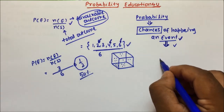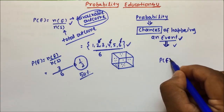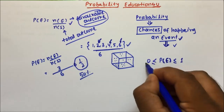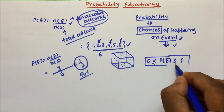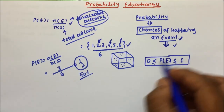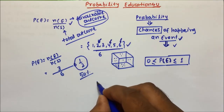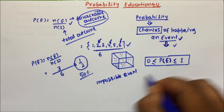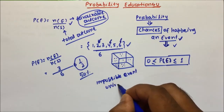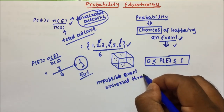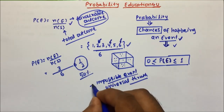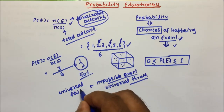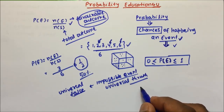Probability will range between 0 to 1. Probability will be 0 for impossible events, and probability will be 1 for universal truths. Impossible events can also be called universal false.